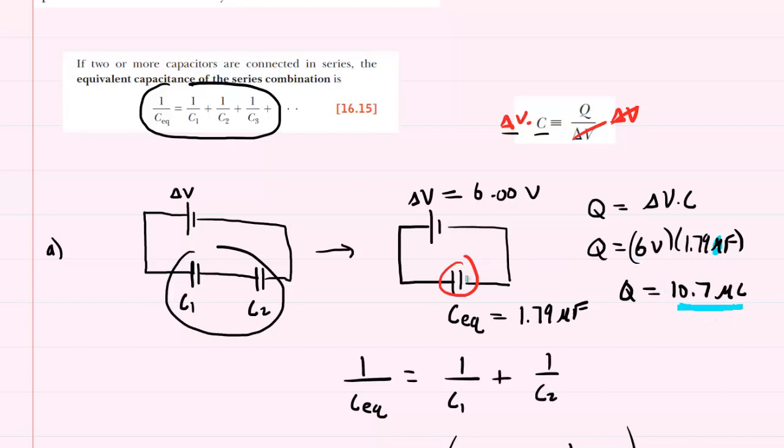Now, it does turn out that when you have an equivalent capacitor that is derived from series capacitors, then the charge on those series capacitors is also the charge obtained for the equivalent capacitor. So that's kind of a mouthful, but basically what we're saying is that C1 will equal 10.7 microcoulombs, and so will C2 equal 10.7 microcoulombs. So these would be the correct answers for part A.